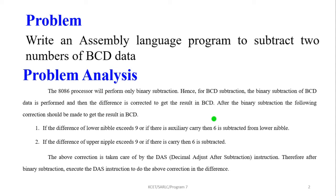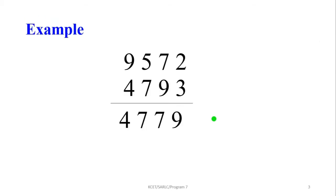After the binary subtraction, the following corrections should be made to get the result in BCD: if the difference of the lower nibble exceeds 9 or if there is an auxiliary carry, subtract 6 from the lower nibble. If the difference of the upper nibble exceeds 9 or if there is a carry, 6 is subtracted. This correction is handled by the DAS instruction — Decimal Adjust after Subtraction. After binary subtraction, execute the DAS instruction to apply the correction.